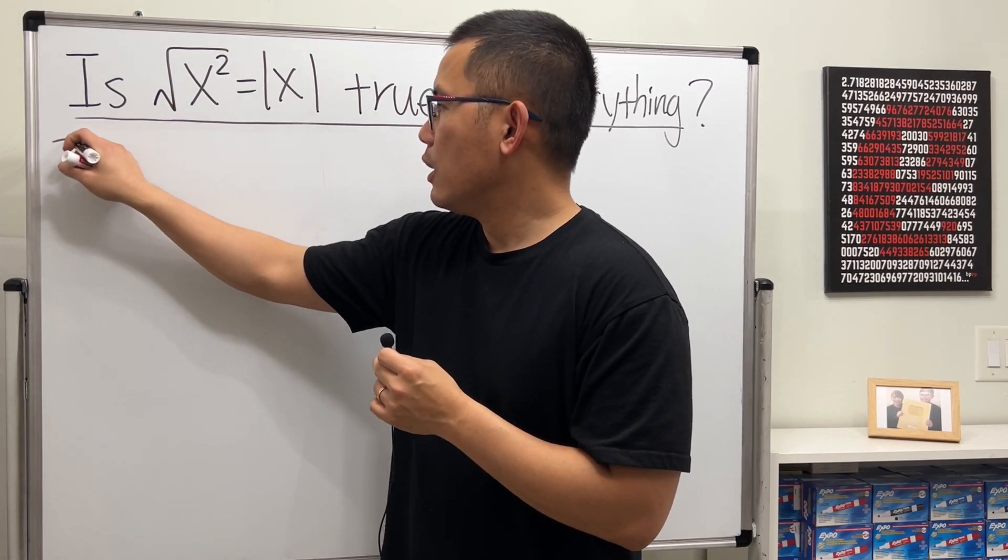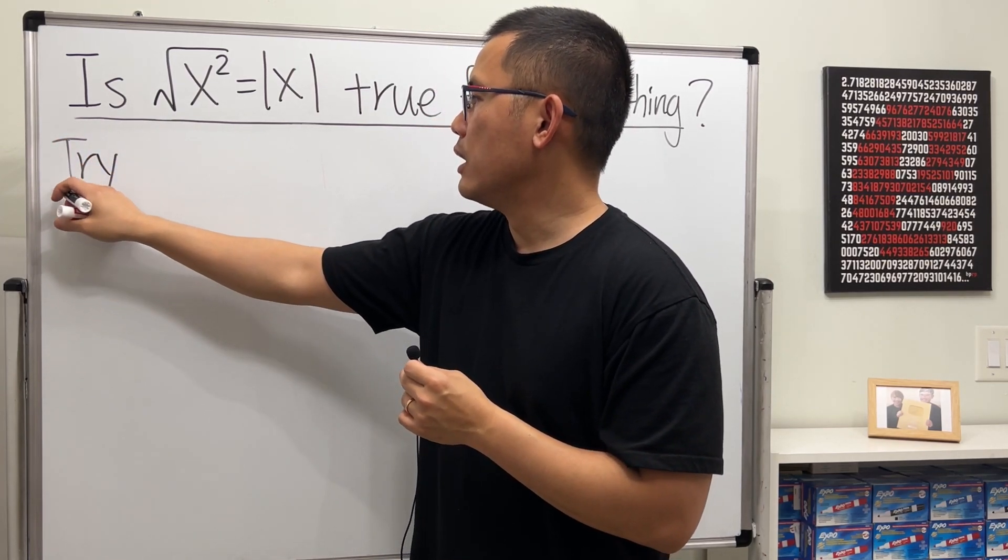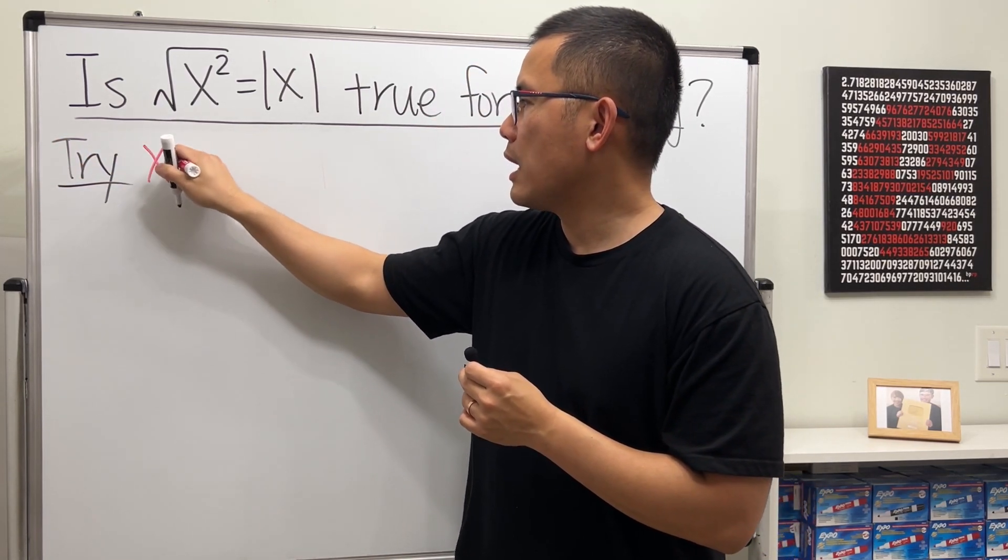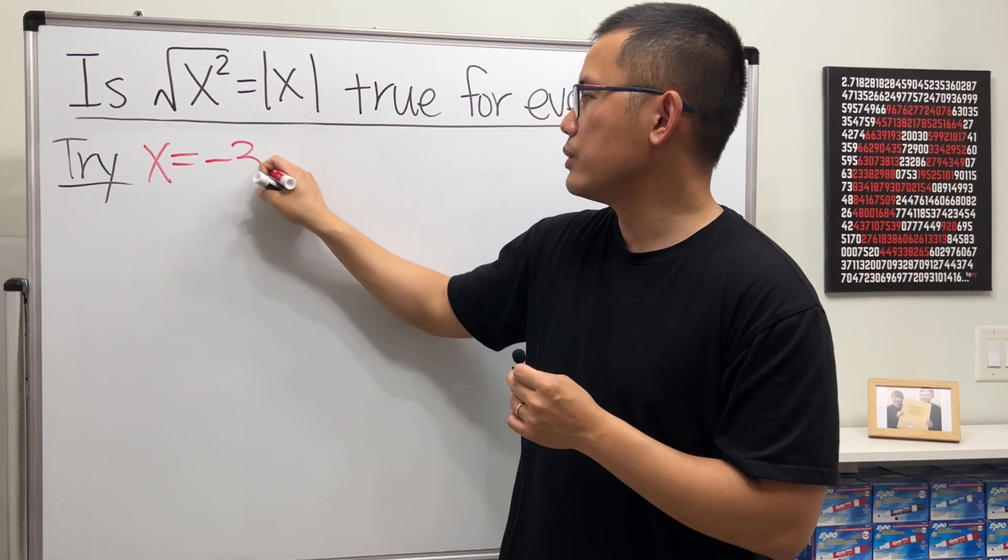First though, why do we need the absolute value? Let's try if we talk about this when x is equal to negative 3.